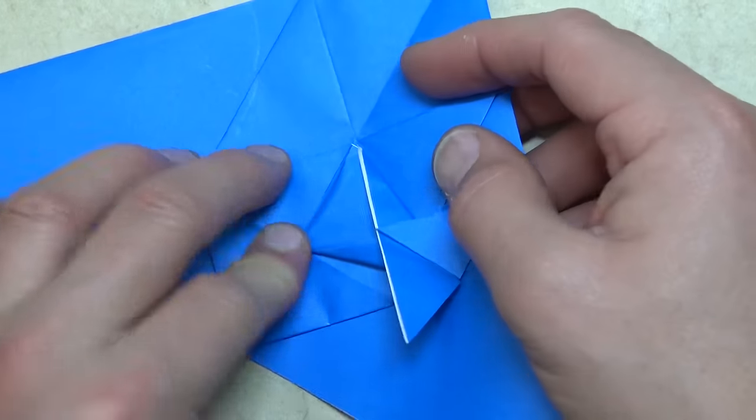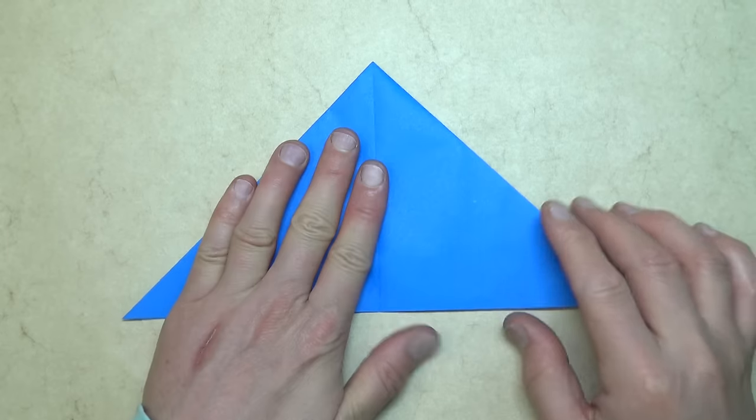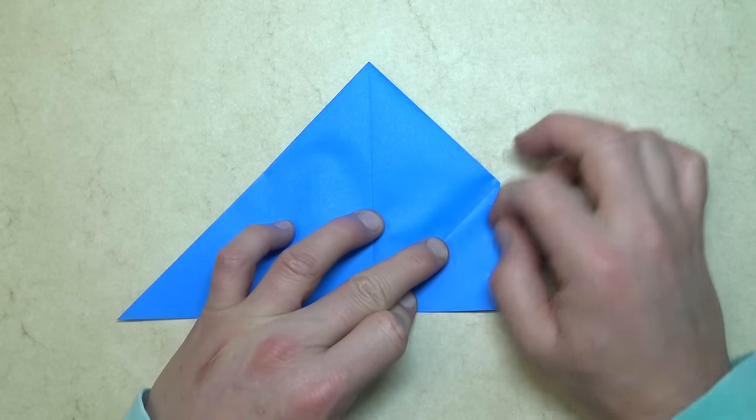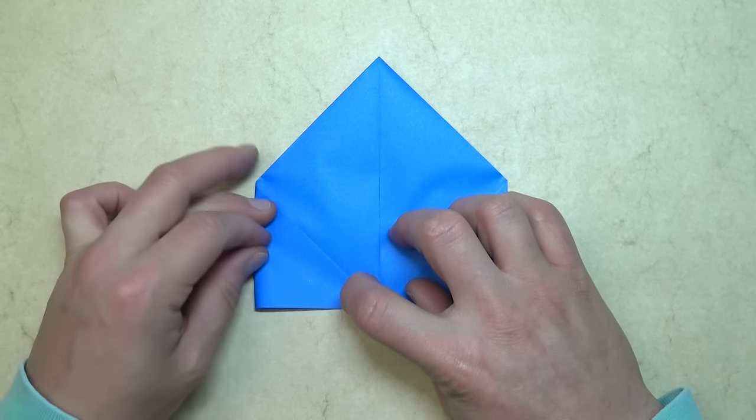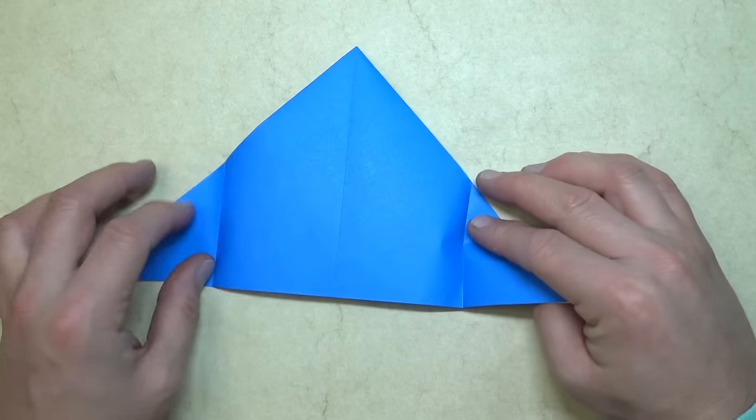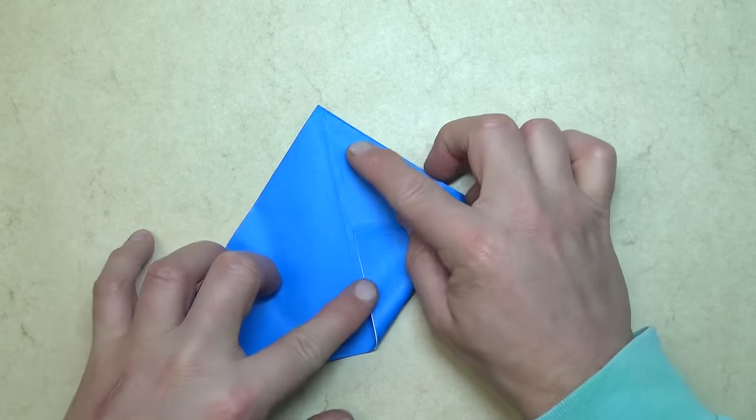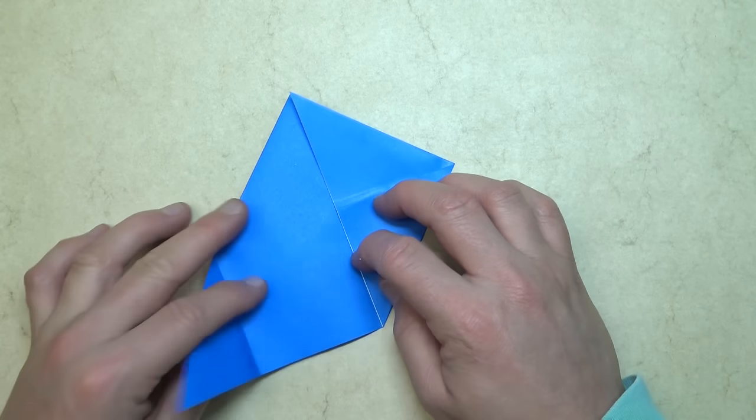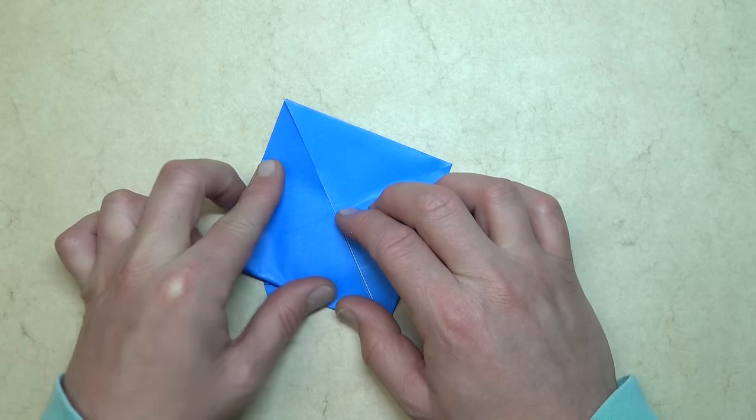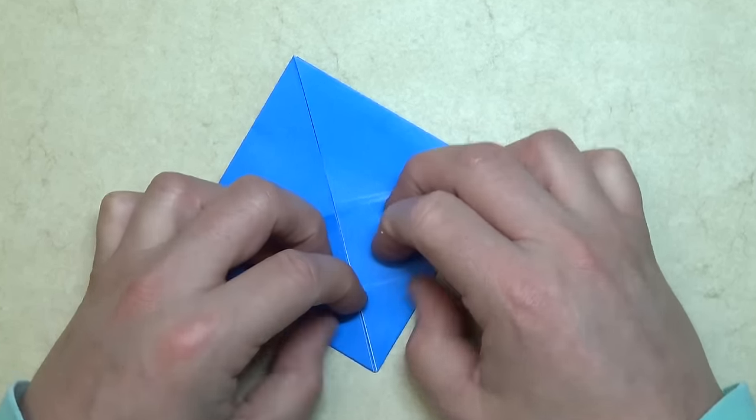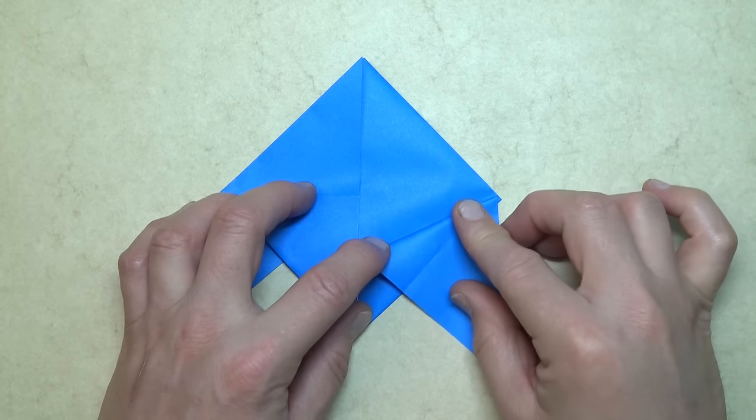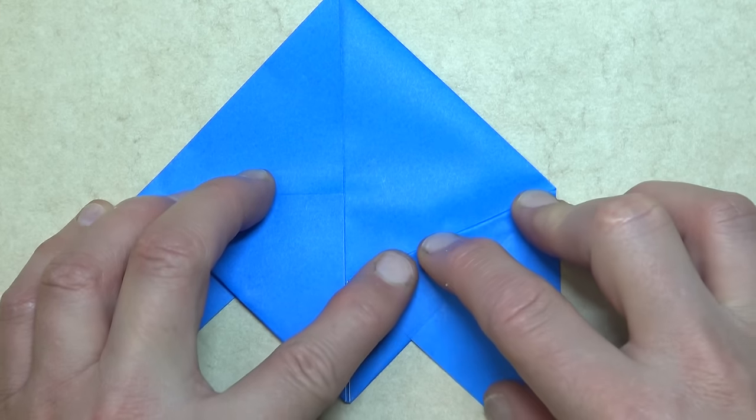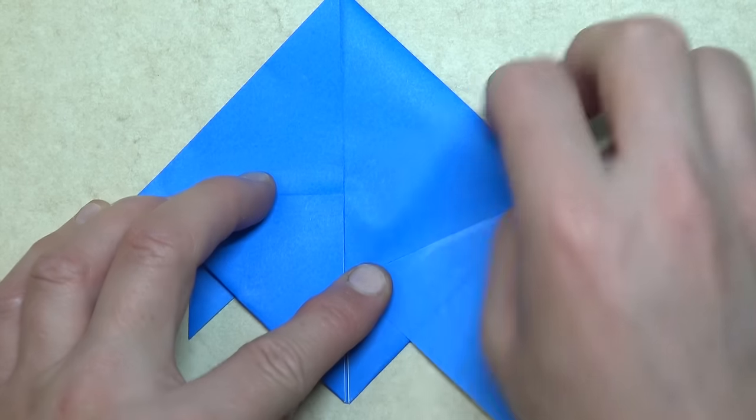Okay. Now turn over, and it's time to work on the face and the fins. So, fold this flap to the middle. Repeat. Unfold these flaps and fold them to the top. Now fold this flap down so that this crease aligns with this edge. And repeat.